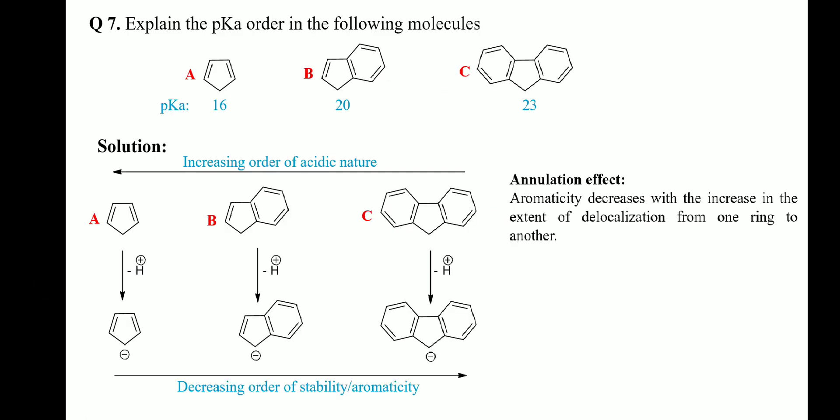Question 7: explain the pKa order in the following molecules. The greater the stability of the conjugate base, the higher the acidity and the lower the pKa. The stability of the conjugate base of A is the highest, followed by B, and then C, due to the annulene effect. Therefore A has the lowest pKa, followed by B, and then C. Hope this lecture will be helpful for you. Thank you very much.